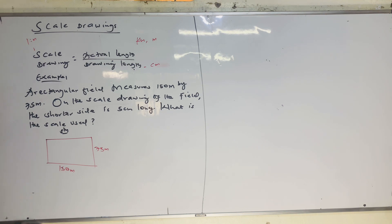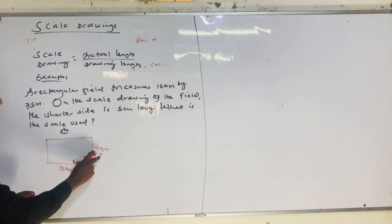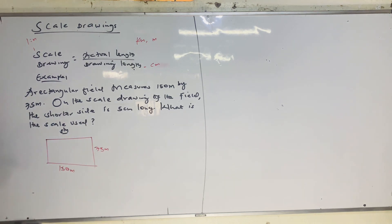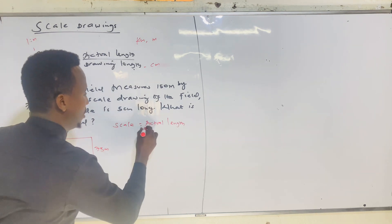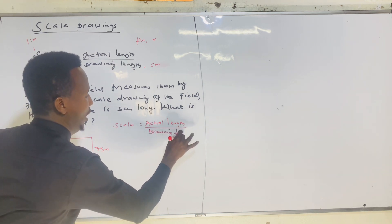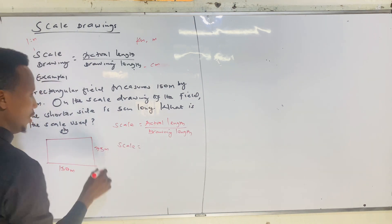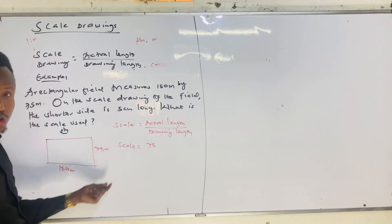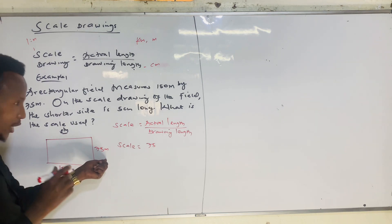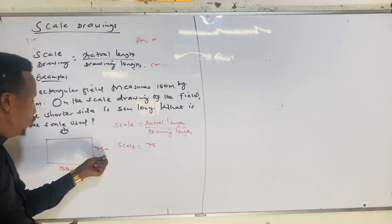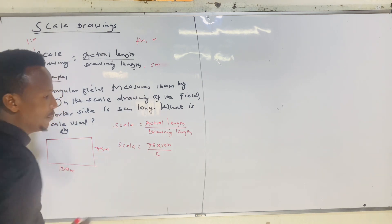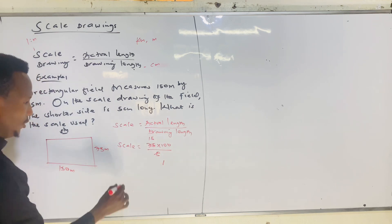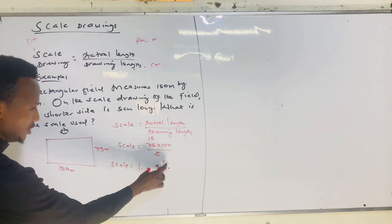On the scale drawing, the shorter side — which is 75 meters — is 5 centimeters long on paper. Scale equals actual length divided by drawing length. The actual length is 75 meters, but we need to convert it into centimeters. One meter equals 100 centimeters, so 75 meters times 100 equals 7500 centimeters. Dividing by the drawing length of 5 gives 1500. So the scale is 1 to 1500.